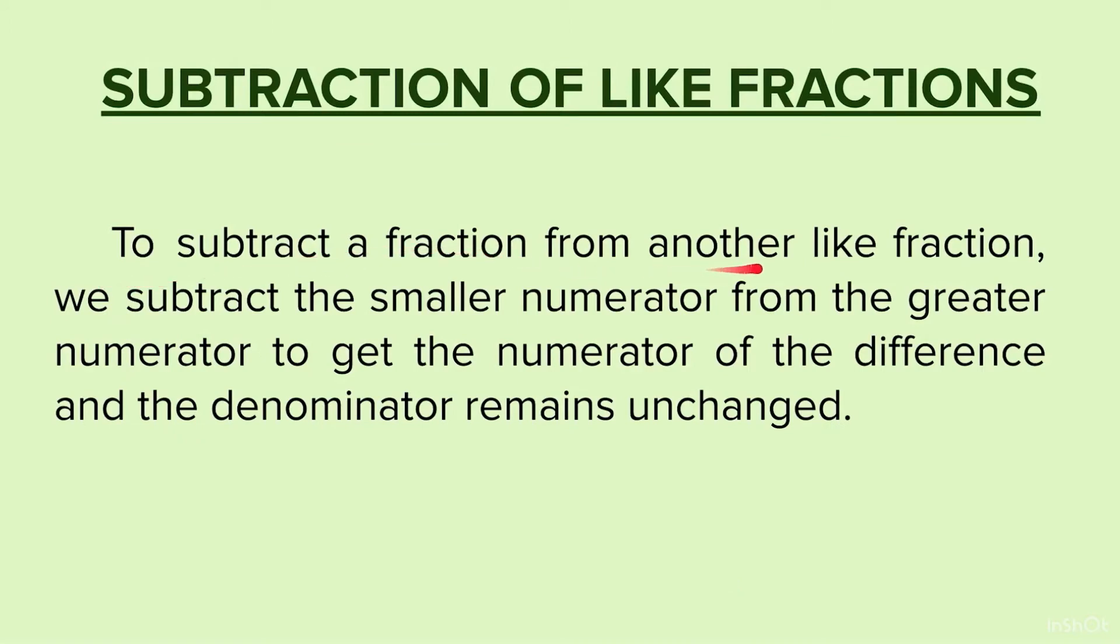To subtract a fraction from another like fraction, we subtract the smaller numerator from the greater numerator to get the numerator of the difference. And the denominator remains unchanged. When we have to subtract like fractions, we subtract the greater numerator from the smaller numerator. That gives us our answer to the numerator. And the denominator remains the same.